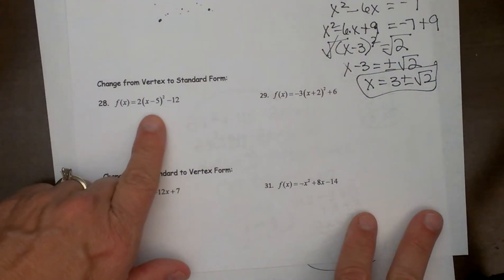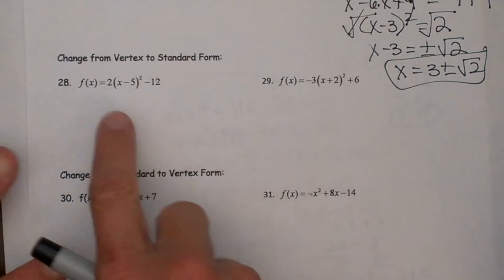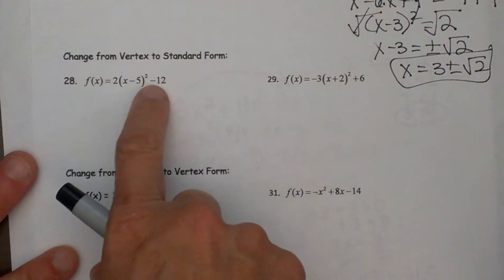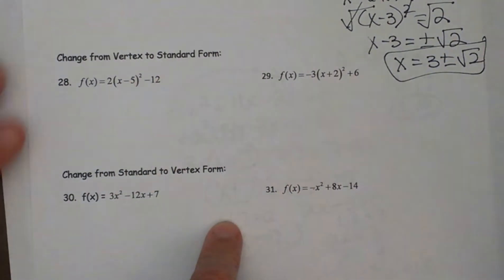Okay, vertex form has a nice easy quadratic. It is nice and pretty. We have a times x minus h squared plus k where h,k is our vertex of our quadratics. So in this case it is 5, -12 so that is the vertex of the quadratic.